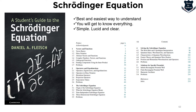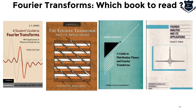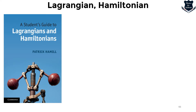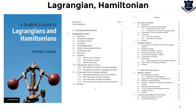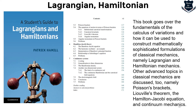For Fourier transforms, I have several recommendations: J.F. James' book, Bracewell's book — any one of these four books you can use. The next component is the Lagrangian and Hamiltonian formalism — Patrick Hamill's A Student's Guide to Lagrangians and Hamiltonians is a beautiful read. The book starts with framing you up on fundamental concepts like virtual and generalized force, calculus of variations, and a lot more — covering how variational calculus can be used to construct mathematically sophisticated formulations, plus advanced topics like Poisson brackets and the Hamilton-Jacobi equation.